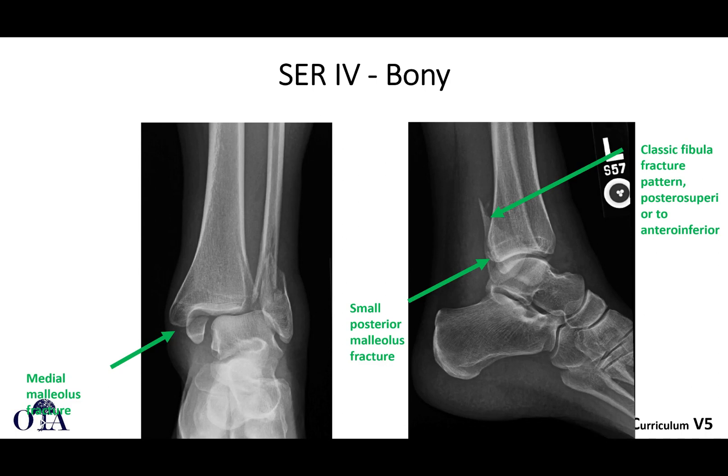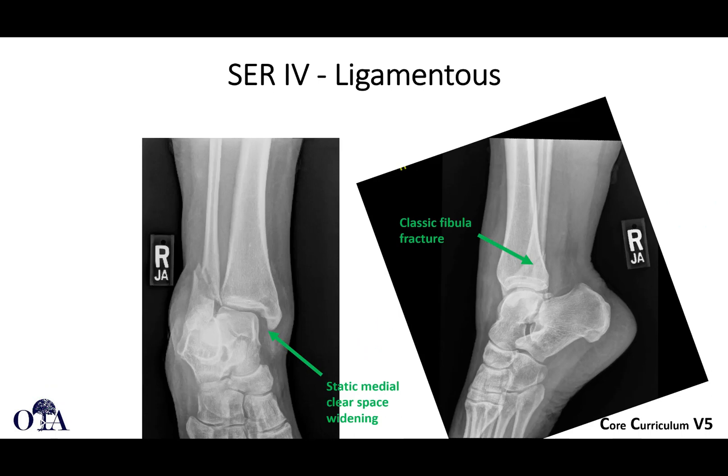SER 4 is shown here: lateral malleolus fracture, small posterior malleolus fracture, definite medial malleolus fracture, and that classic fibula fracture line. For the ligamentous SER 4, remember you could have a medial malleolus fracture or a medial ligament injury — here you're going to see medial clear space widening on static injury films without needing a stress view, classic fibula fracture pattern, and definite medial widening.